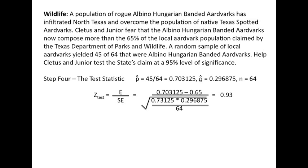To solve this we calculate P-hat, which is 45 divided by 64. Q-hat is 1 minus P-hat, and N is 64. Our test statistic is the effect size: the difference of P-hat from P, divided by the standard error — the square root of P-hat times Q-hat divided by N. Plugging in our values: 0.703125 minus 0.65, divided by the square root of 0.703125 times 0.296875 over 64.